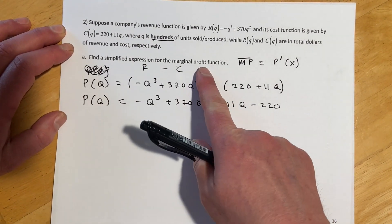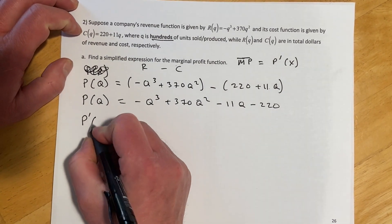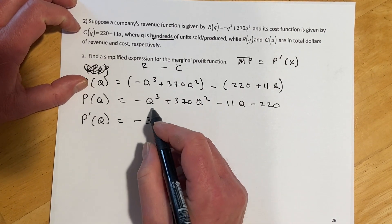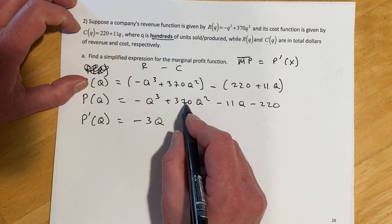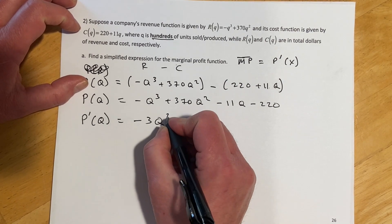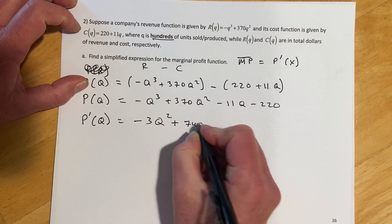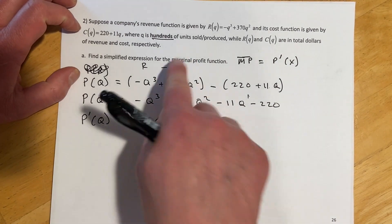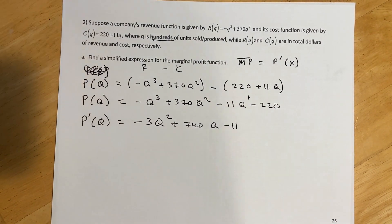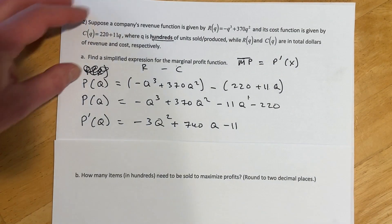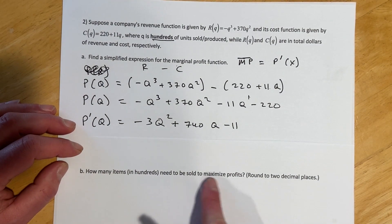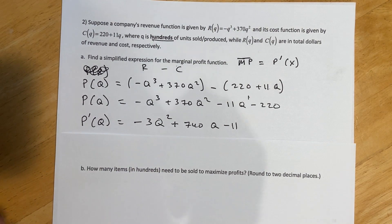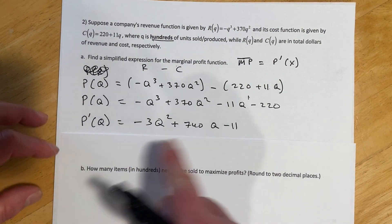It asked for our marginal profit. So that means we have to find the derivative of that. So we'll find P prime of Q. And that's going to go negative 3Q. And then 2 times that would be 740. Oops, that should be squared. And then 1 times minus 11 for minus 11. So that would be our marginal profit function. And then part B is going to ask us how many items need to be sold to maximize profits, round to two decimals. And so for this on the computer, you're just going to put the answer in just like it comes out when you do it on the calculator. And so I'll show you that in part next.